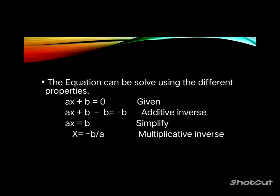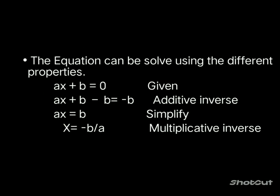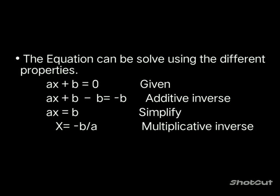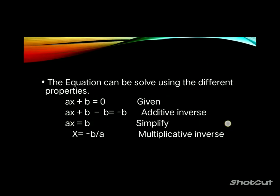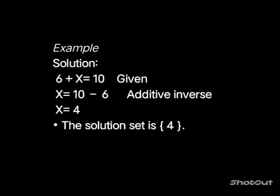We apply the additive inverse, giving negative b equals negative b, simplified to ax equals b. Then the multiplicative inverse is applied. Example: 6 plus x equals 10. Applying additive inverse gives x equals 10 minus 6, so x equals 4. The solution set is {4}.